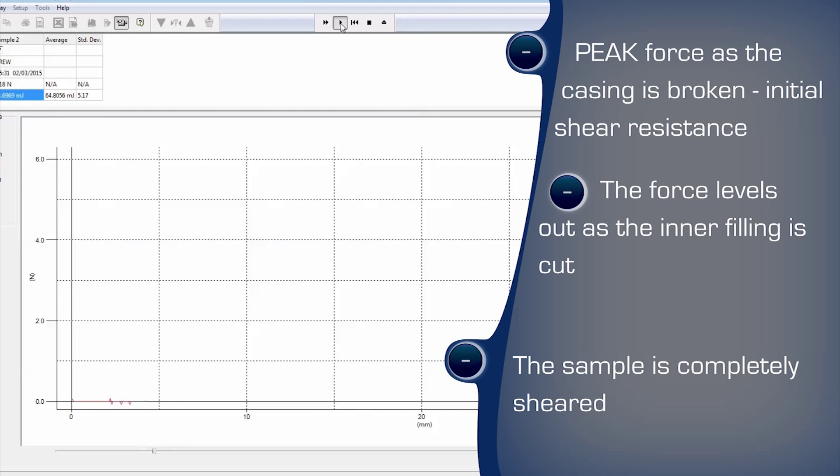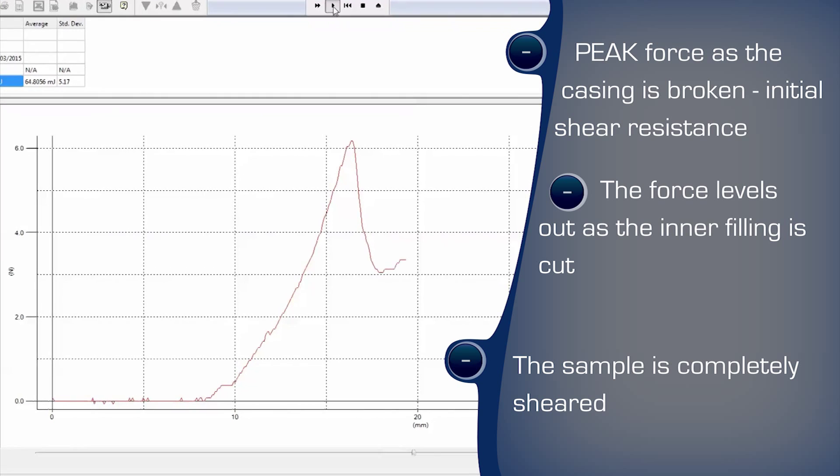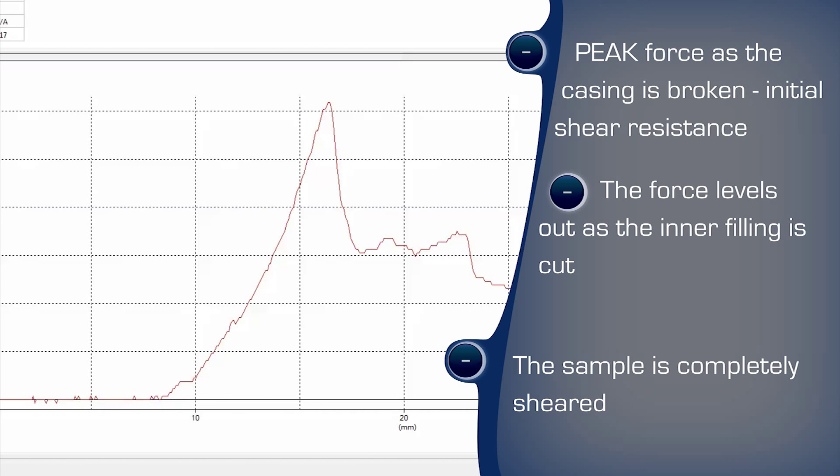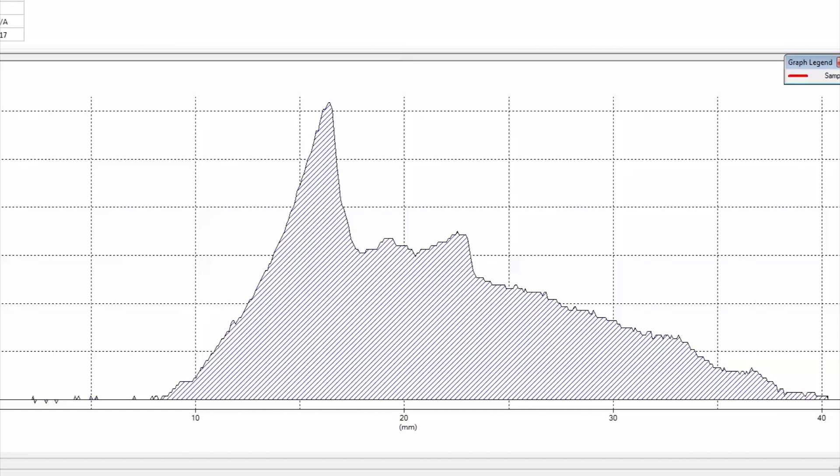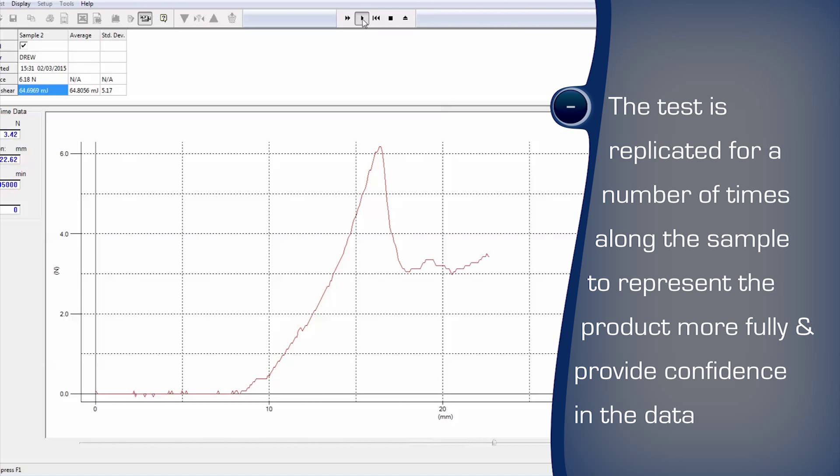Once slicing is underway, the remainder of the shear is valuable to measure the energy to completely cut the hot dog and pass through the filling. This behavior can also be correlated against the findings from sensory testing. The automatic curve area calculation immediately returns this information. The test is consistently repeatable for absolute confidence in the data.